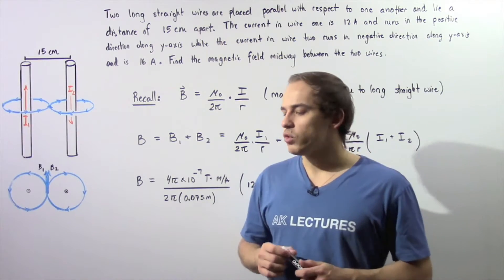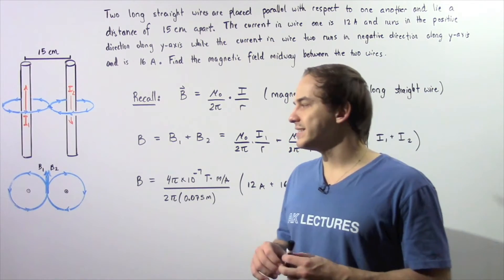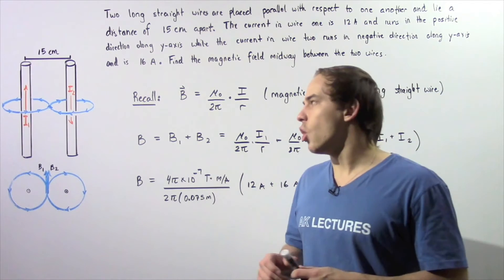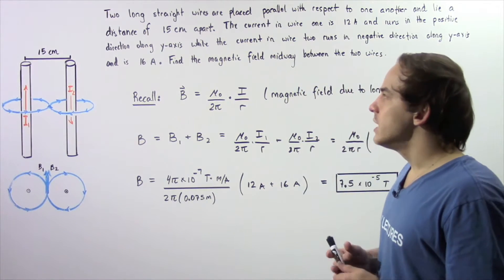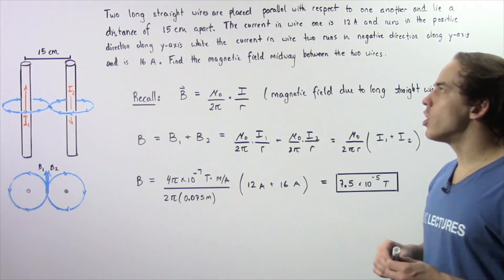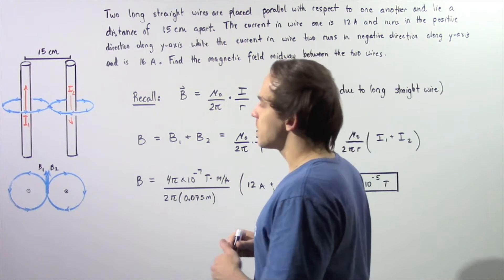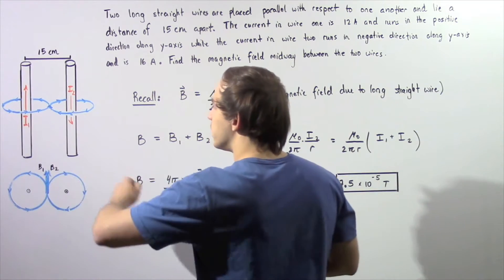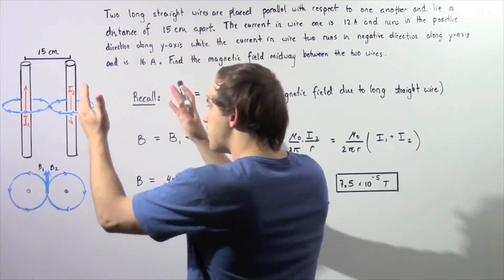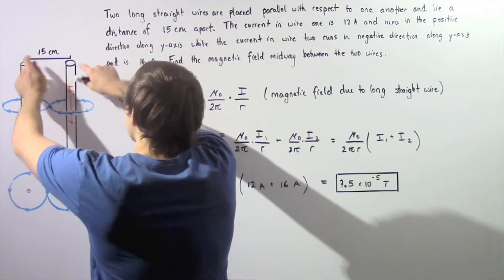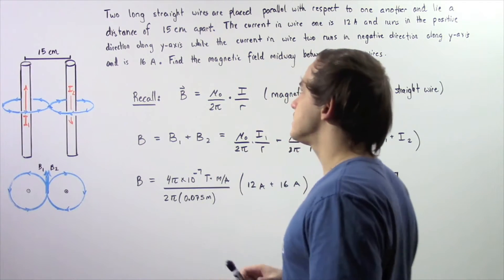Let's look at an example that deals with magnetic fields produced as a result of current in a long conducting wire. Suppose that two long straight wires are placed parallel with respect to one another and lie a distance of 15 centimeters apart. We have wire number one and wire number two that are parallel and separated by a distance of 15 centimeters.